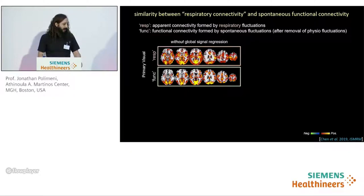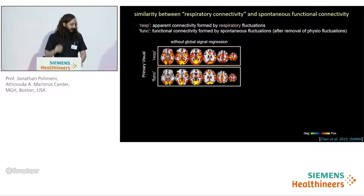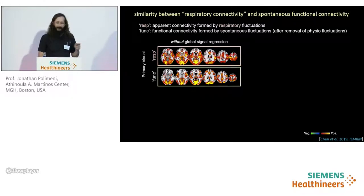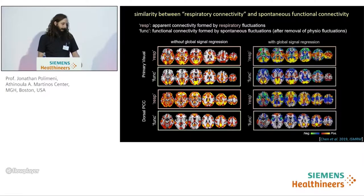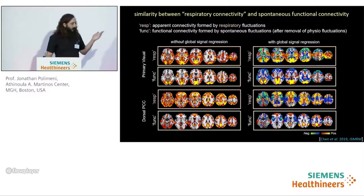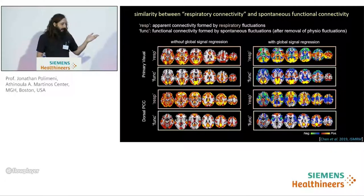We then performed seed-based functional connectivity for each dataset. Using a seed from the visual network, the correlations observed in the synthetic data — containing only respiratory-driven dynamics — closely resembled the correlations in the denoised data, containing mostly neuronal fluctuations. We saw similar resemblance using the dorsal PCC as a seed. We repeated the same analysis after regressing out the global signal, which is often used to remove systemic physiological fluctuations but does not account for regional differences in physiological responses. Again, we saw strong similarities between the respiratory connectivity and the spontaneous functional connectivity.